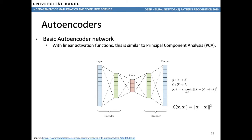The idea is that you have some input — this could be an image, for instance — that you put in as the input, and then you want the same input image as the output. You then learn this latent space, which can represent your images in a compact way.